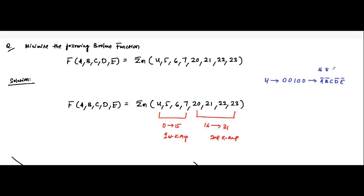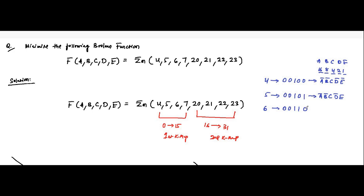Min-term 6, which is 0,0,1,1,0 in bit positions 16,8,4,2,1, gives A-bar, B-bar, C, D, E-bar. Min-term 7, which is 4 plus 2 plus 1, gives A-bar, B-bar, C, D, E.